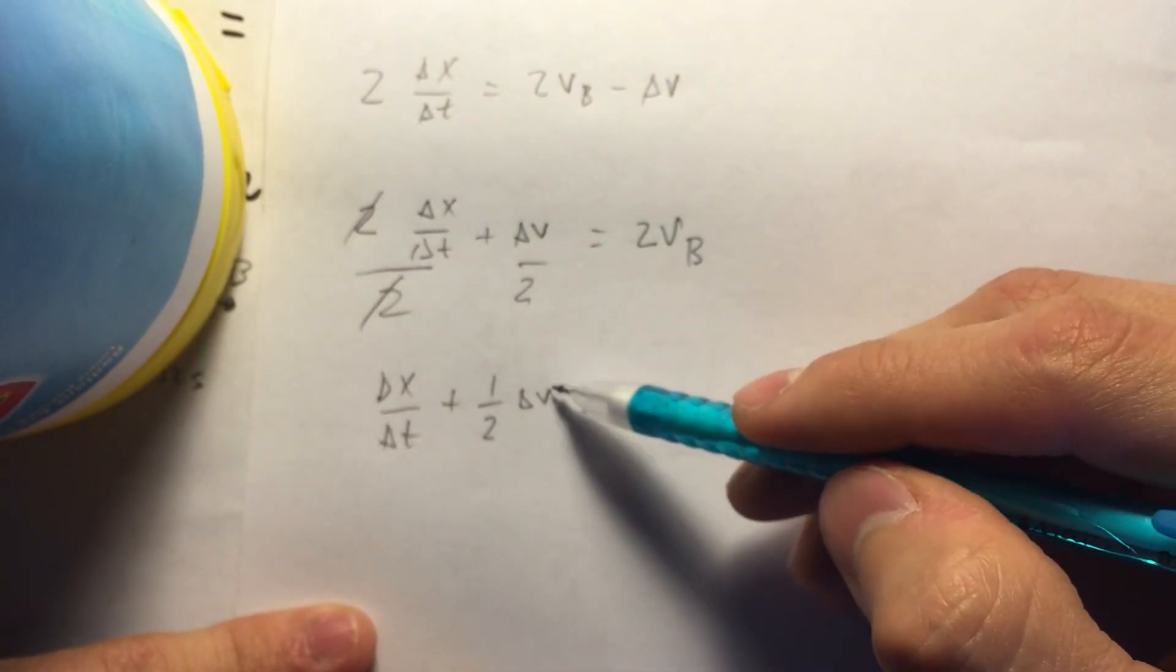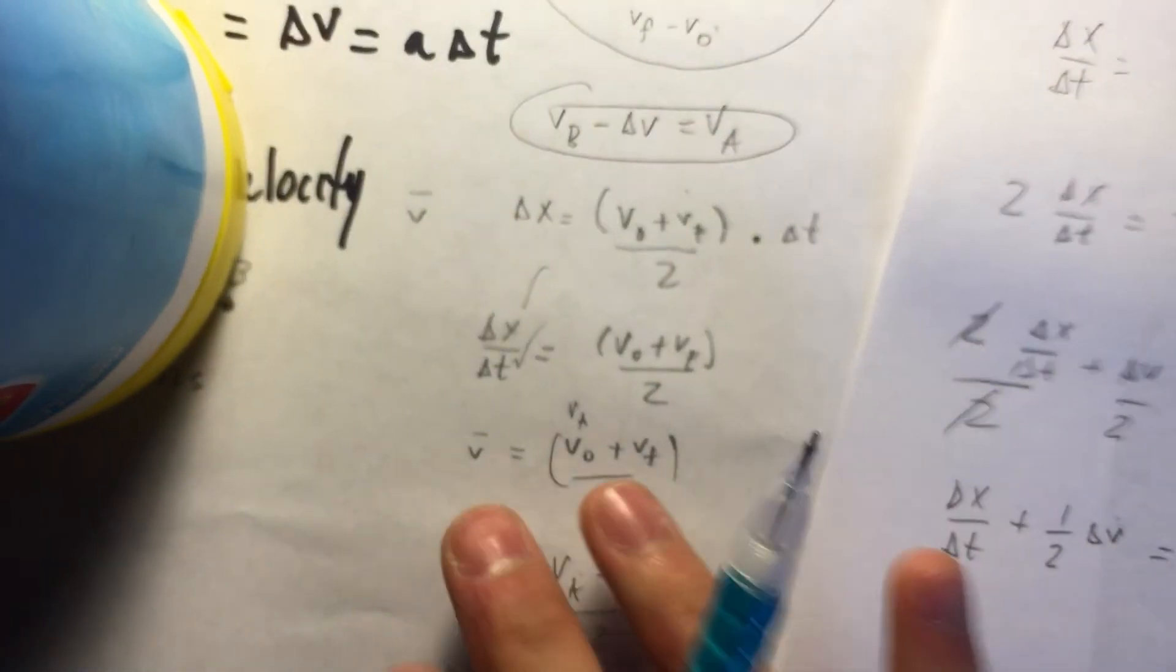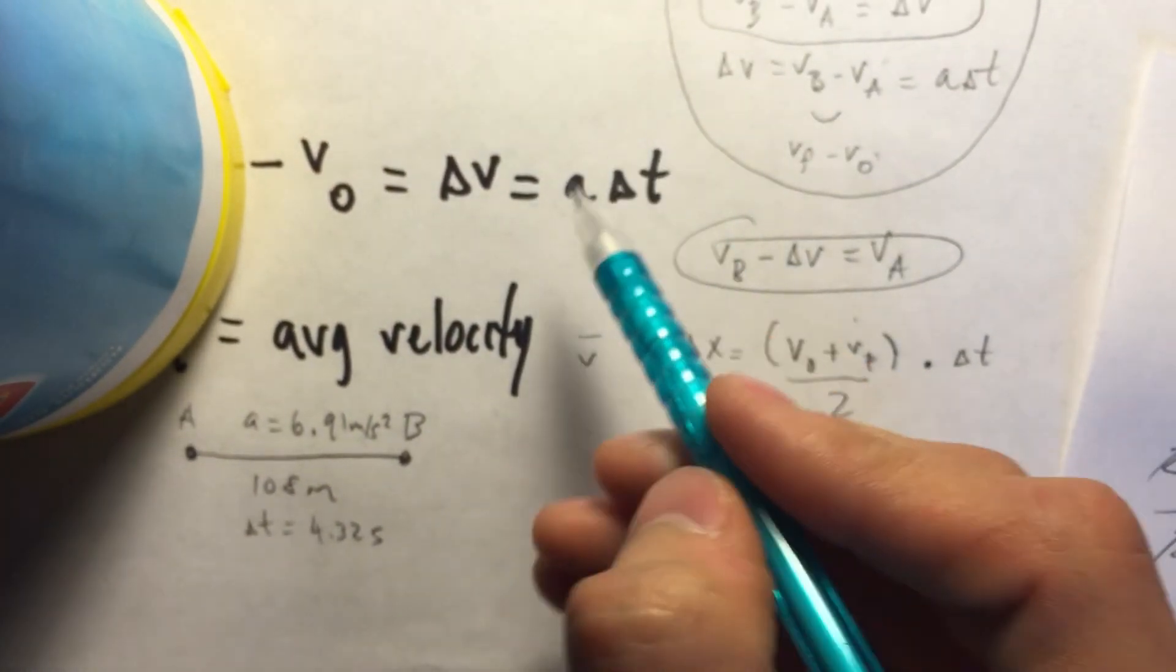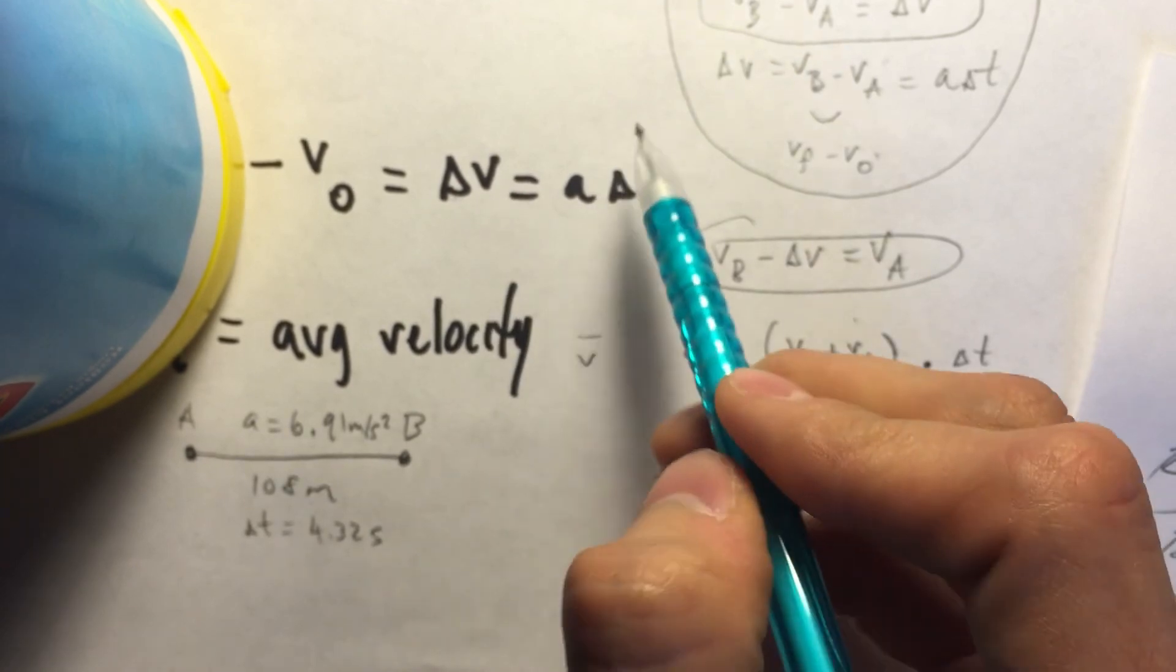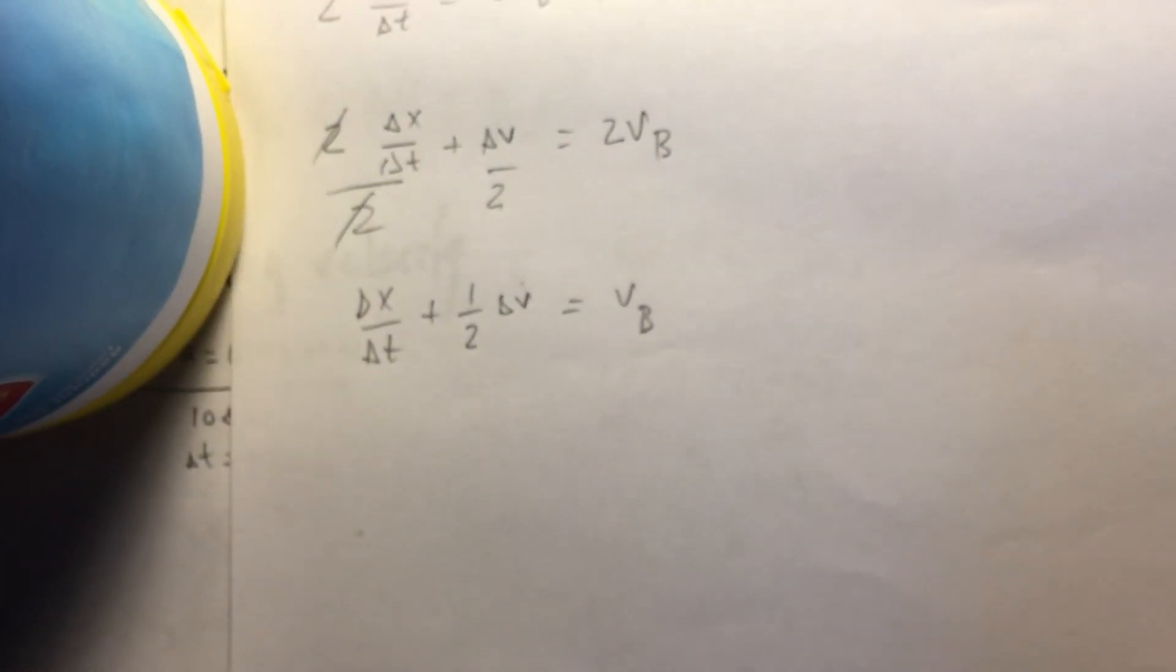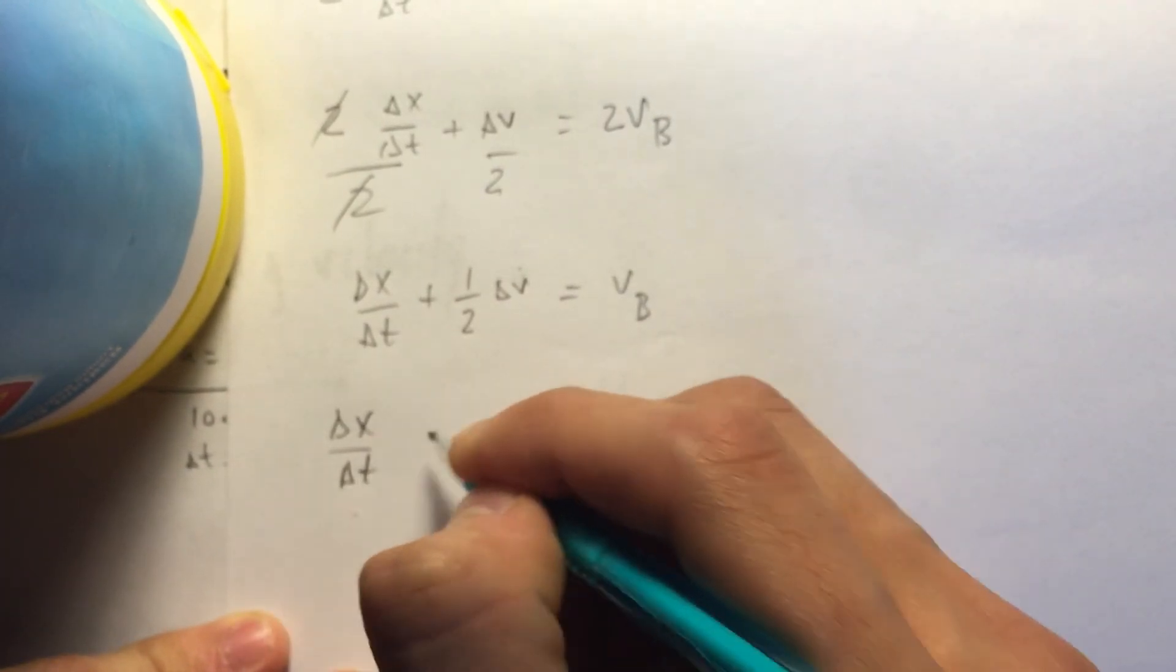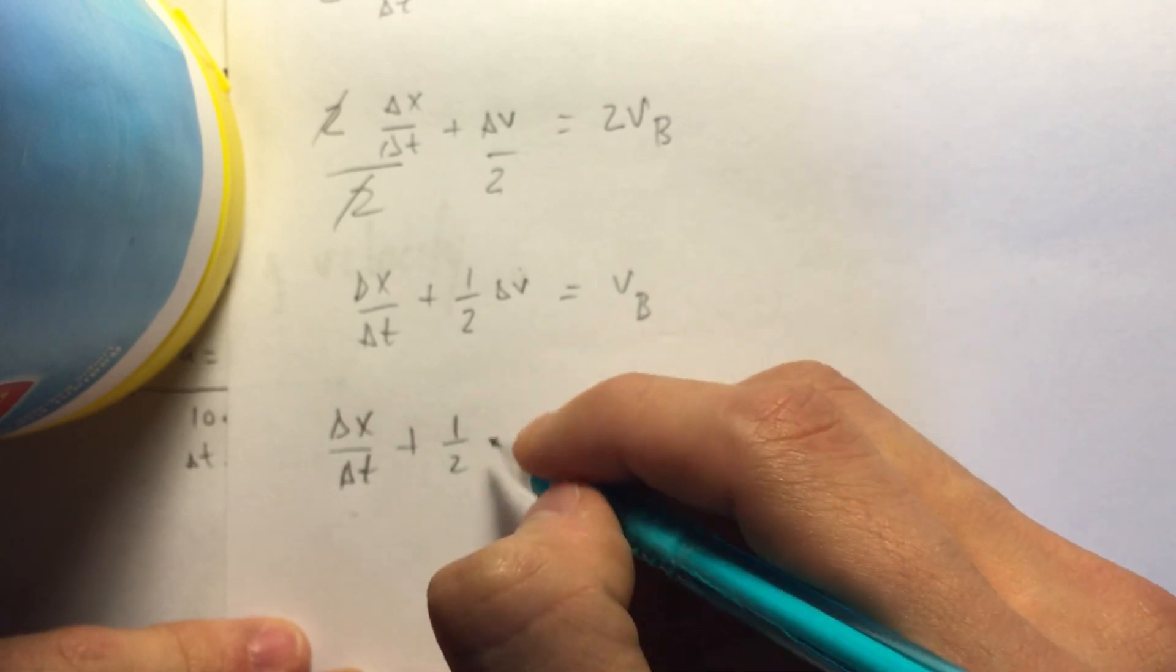If you notice, what exactly does change in V mean? Well, as I mentioned earlier, here it is. Change in velocity equals acceleration times time. So now, we know that we have all the values we need to plug in to make this true and to give us a numerical answer.